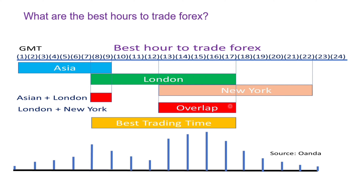This is a histogram that shows the volatility. When the Asian market opens, the volatility is low, and it picks up, going high when London opens and overlaps with Asia.